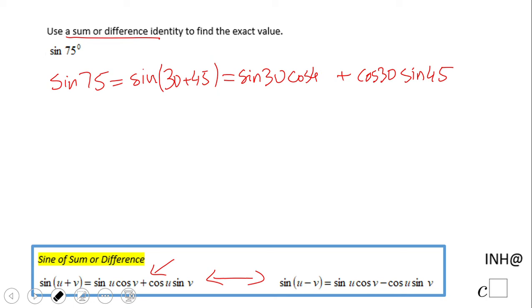And now we're gonna replace all these values with the ones that you can get from a unit circle if you need them, or if you memorize them, that is great. Sin 30 is 1 over 2, cosine 45 is square root of 2 over 2, plus cosine 30 is square root of 3 over 2, sine of 45 is square root of 2 over 2.